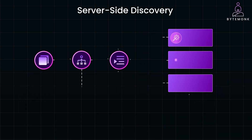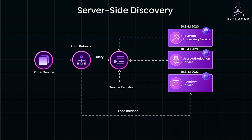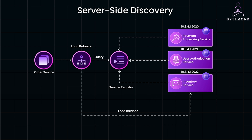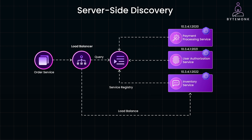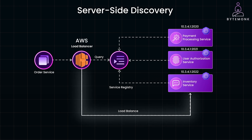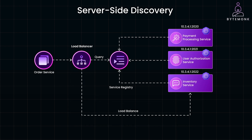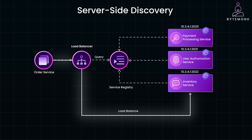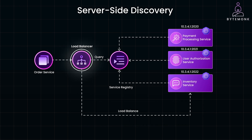In the server-side discovery model, the client sends a generic request to a central load balancer or gateway, which handles the discovery process and forwards the request to the correct service. Take an online banking system as an example. When a user logs in, the system might need to fetch their account details, transactions, and loan information from three different services. Instead of each microservice querying the registry directly, the request is routed through a server-side load balancer like AWS Elastic Load Balancing. The user sends a request to the load balancer, which asks the service registry for available services and directs the request to the appropriate microservices, aggregating the results. The load balancer abstracts the discovery process from the client, making it easier to manage.